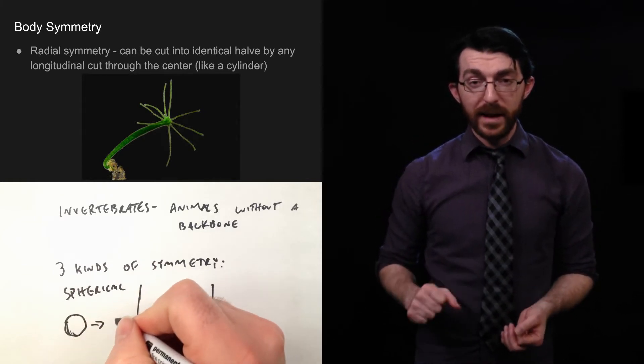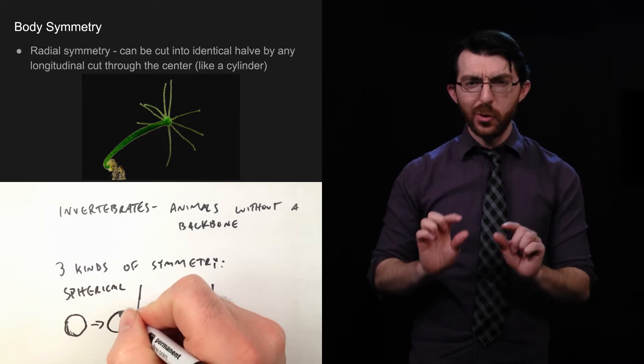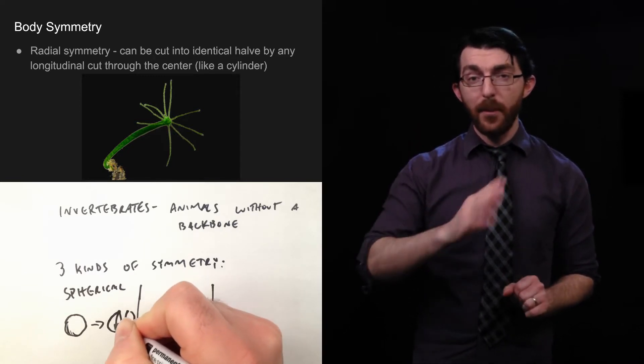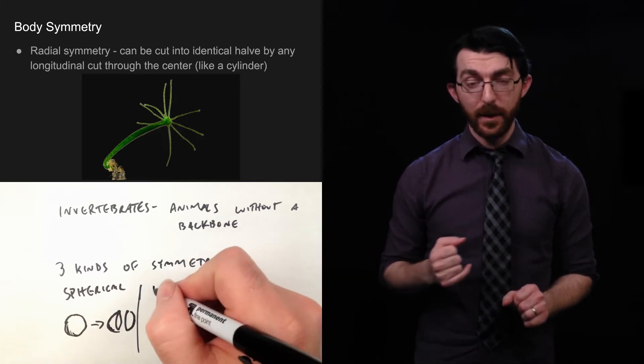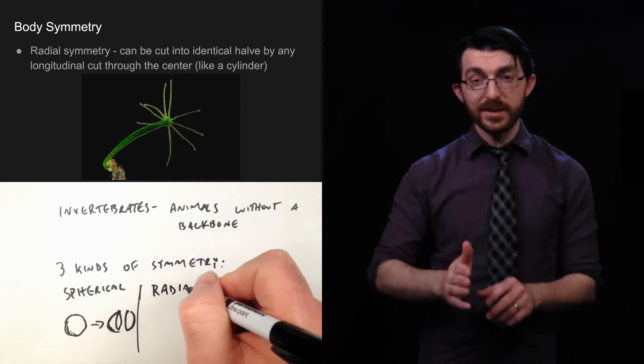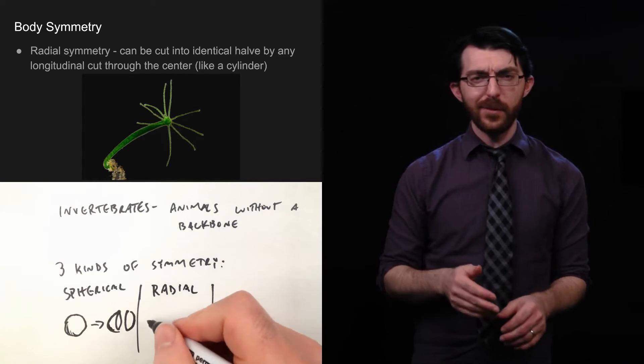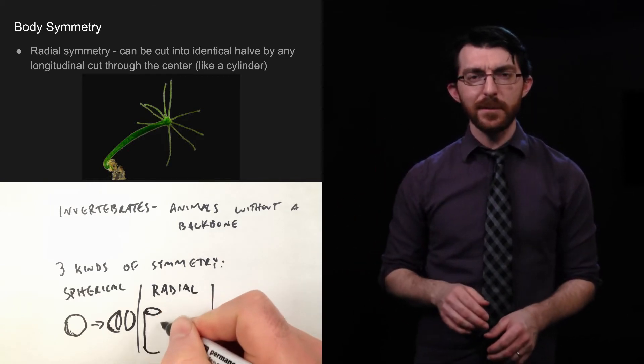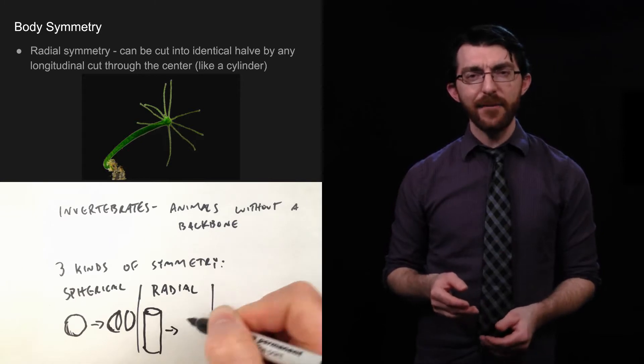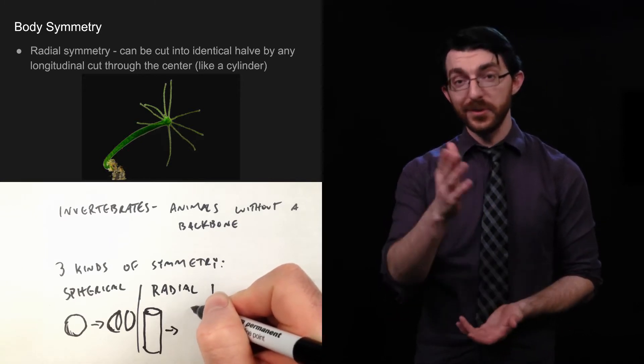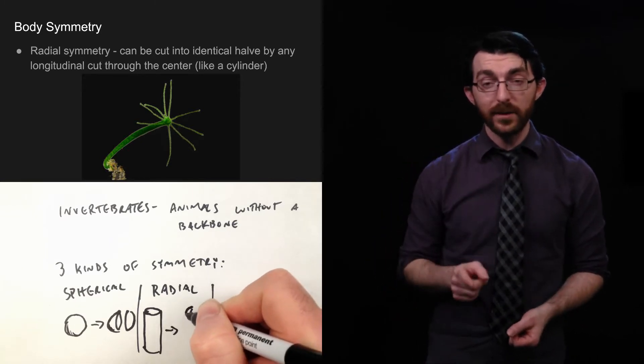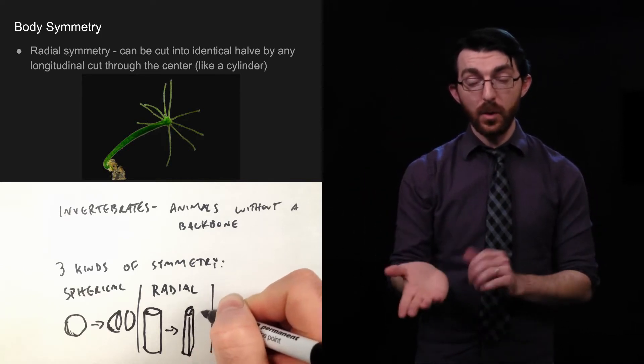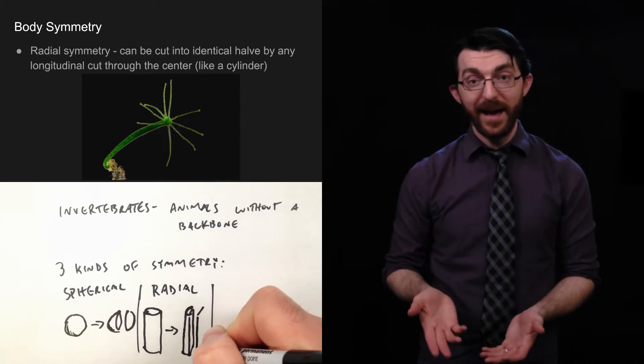Radial symmetry is more of a tube shape. It's where you can be cut into two identical halves by any longitudinal cut through the center. Longitudinal cut means lengthwise. If you've been doing arts and crafts in school, sometimes you'll talk about cutting in half hamburger or hot dog. Well, this would be hot dog. This is lengthwise. So like a tube or a cylinder, if you cut down the length of it, you'll have two identical halves, two half pipes.